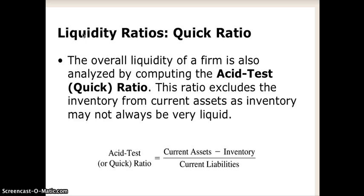Why do we do that? Analysts like to do this because it's useful to know: if the company had to come up with money to satisfy its current liabilities, what if it couldn't sell its inventory at the stated amount, or couldn't sell its inventory at all because the economy turned south? Does the company, without its inventory factored in, have enough current assets to satisfy its current liabilities? It's a very interesting and useful ratio.